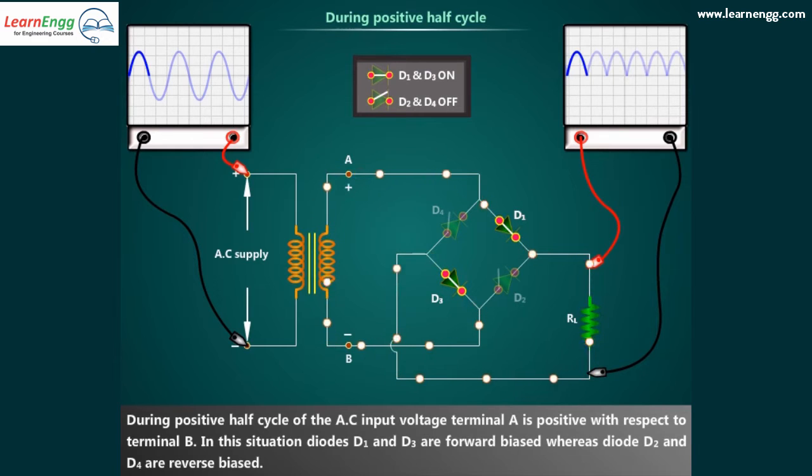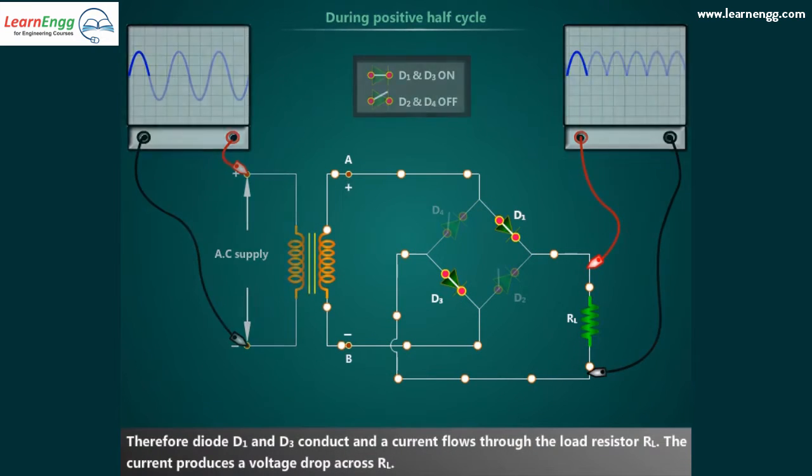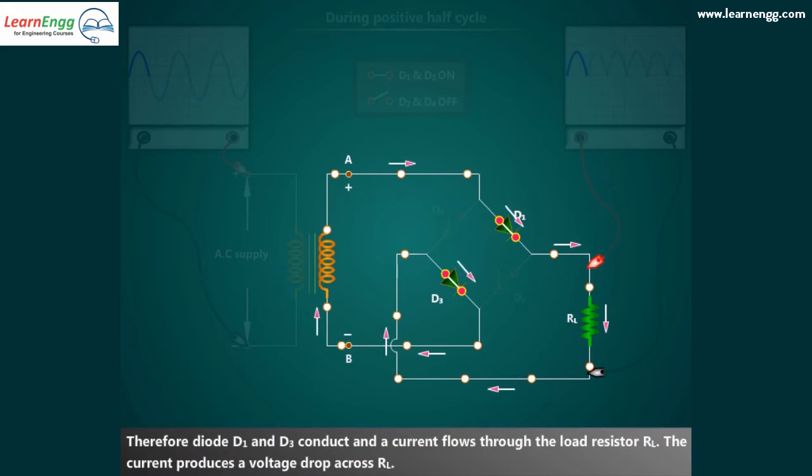In this situation, diodes D1 and D3 are forward biased whereas diodes D2 and D4 are reverse biased. Therefore, diodes D1 and D3 conduct and a current flows through the load resistor RL. The current produces a voltage drop across RL.